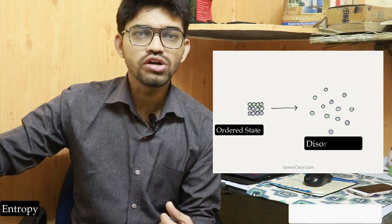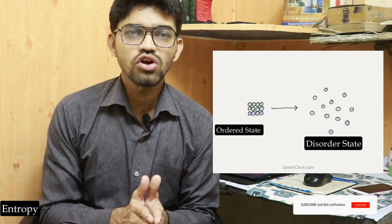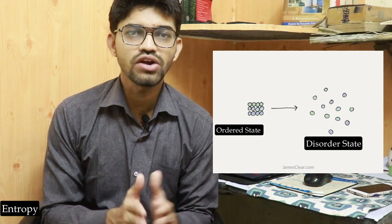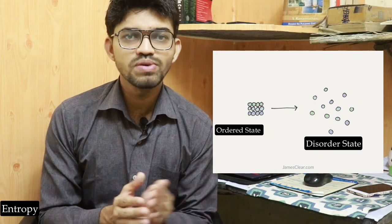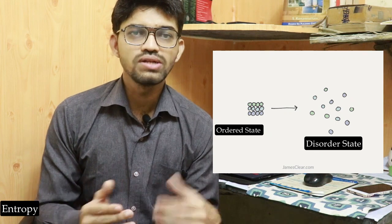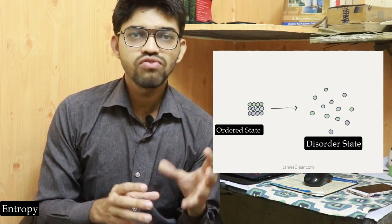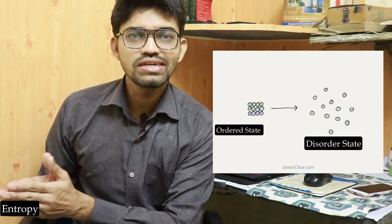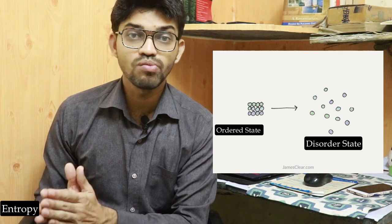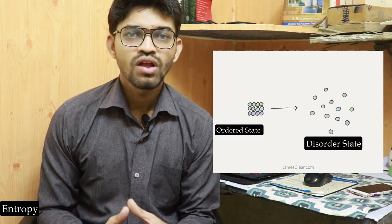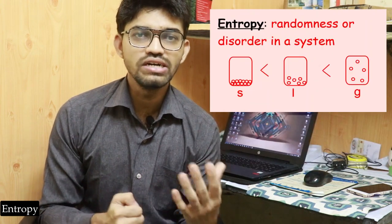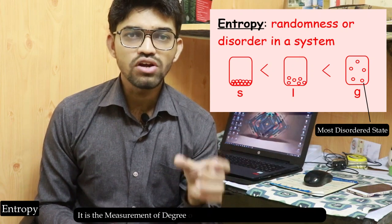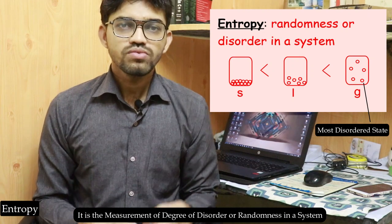In the universe, things tend to move from an ordered state to a disordered state. For example, water molecules are not arranged in a specific pattern or structure — they are in a disordered state. In the case of gases, molecules are very far away from each other, and that represents the most disordered state. We can define entropy as the measurement of the degree of disorder.